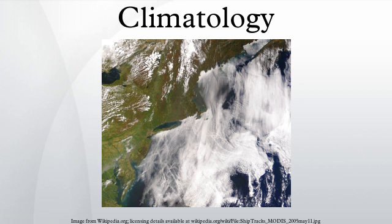The Northern Pacific Index is the area-weighted sea level pressure over the region 30°N to 65°N. The PDO is a pattern of Pacific climate variability that shifts phases on at least inter-decadal time scales, usually about 20 to 30 years. The PDO is detected as warm or cool surface waters in the Pacific Ocean north of 20°N.